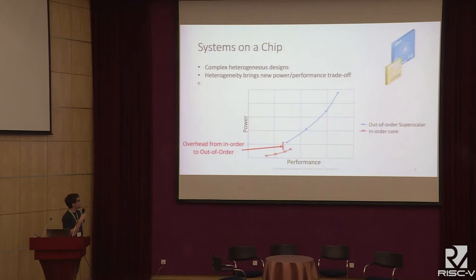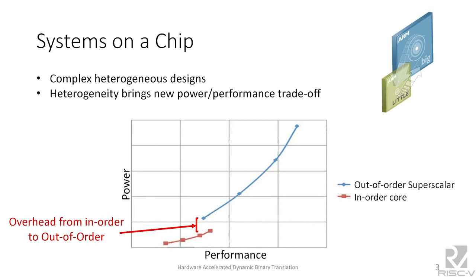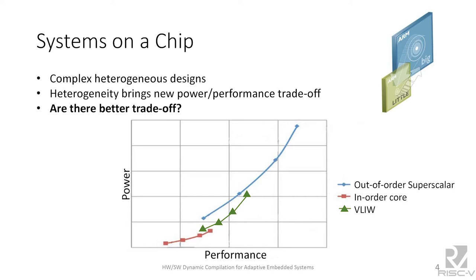Here is a representation from ARM of the different trade-offs you can have between power and performance. You have two curves: the blue one corresponds to the trade-off you can achieve by changing the frequency of the out-of-order core, and the red one by changing the frequency of the in-order core. There is a gap between the in-order and the out-of-order cores, and this is the cost of the out-of-order.